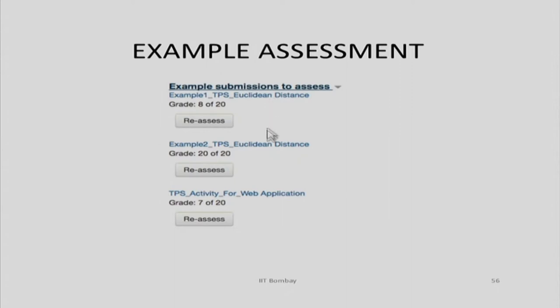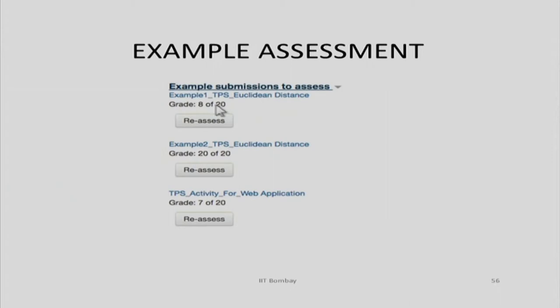The example submissions consist of three examples — two from mathematics and one from web applications — each graded by the instructor with detailed feedback explaining why each TPS was good or not. You have to go to these example submissions, assess them individually, and then compare your assessment to the instructor's, because that closeness is the measure of assessment quality. People may grade an activity 17 out of 20, or 12, or even 0, but if those are far from the instructor's grade, they are less valid.